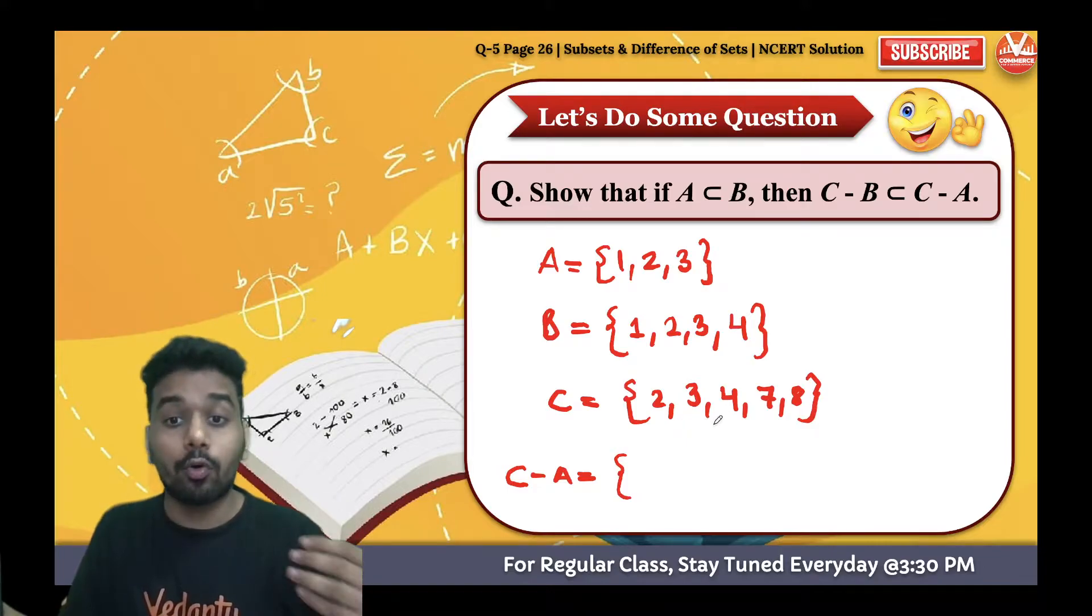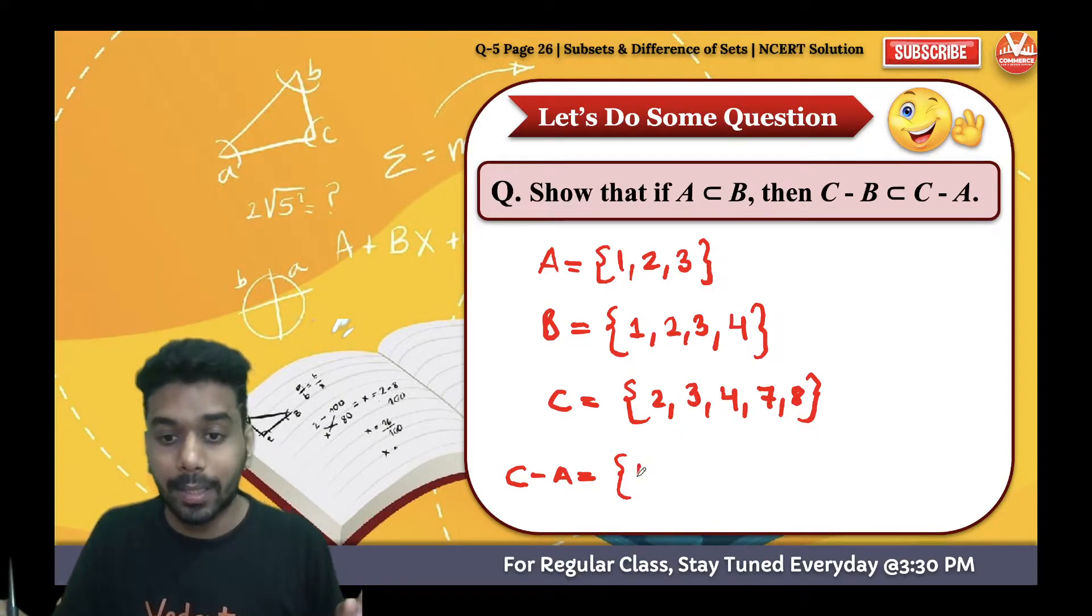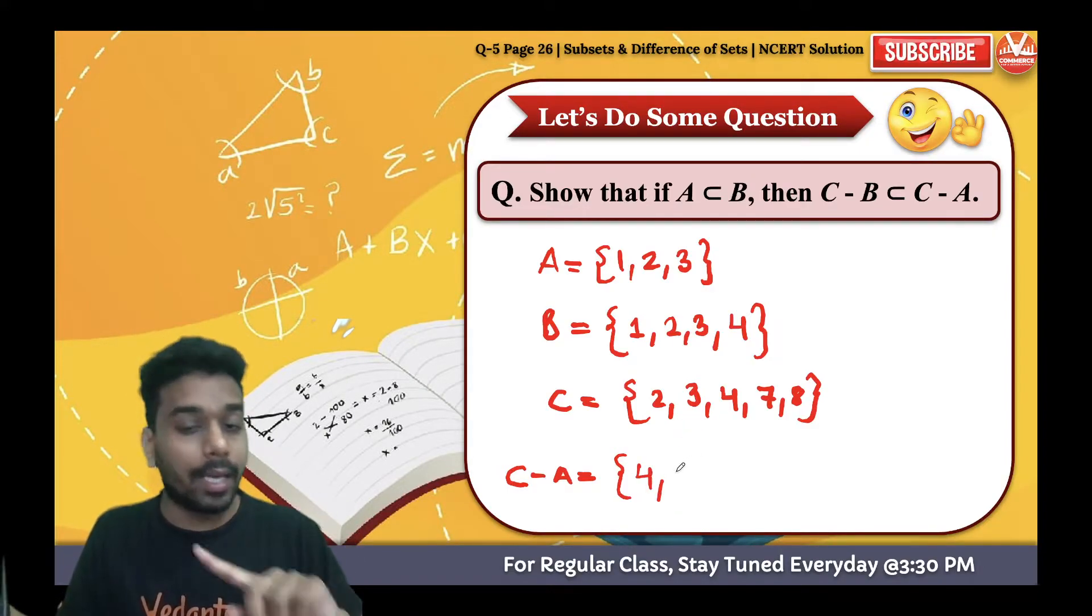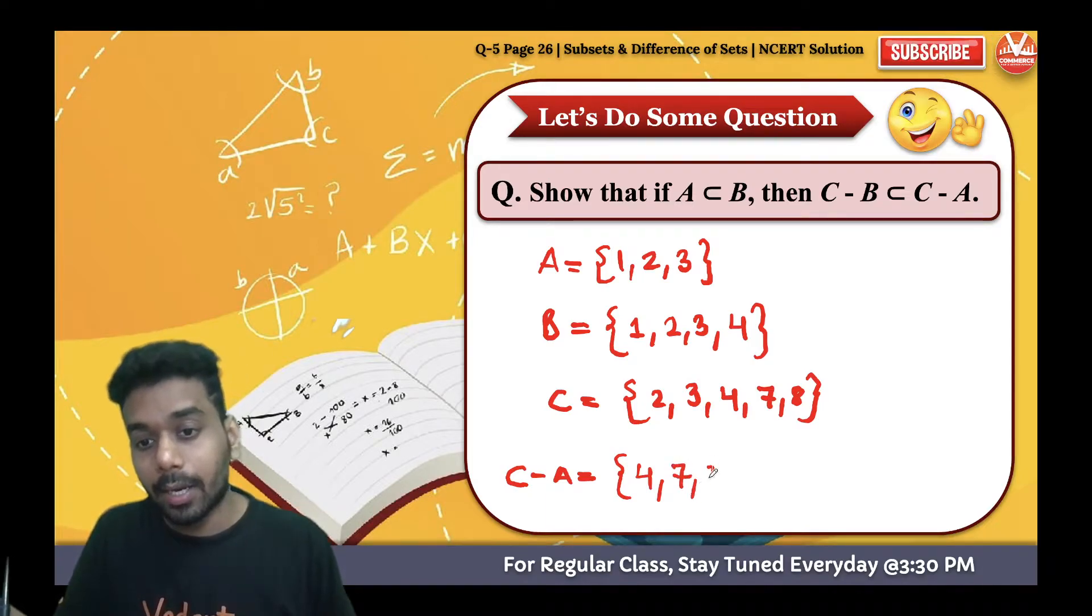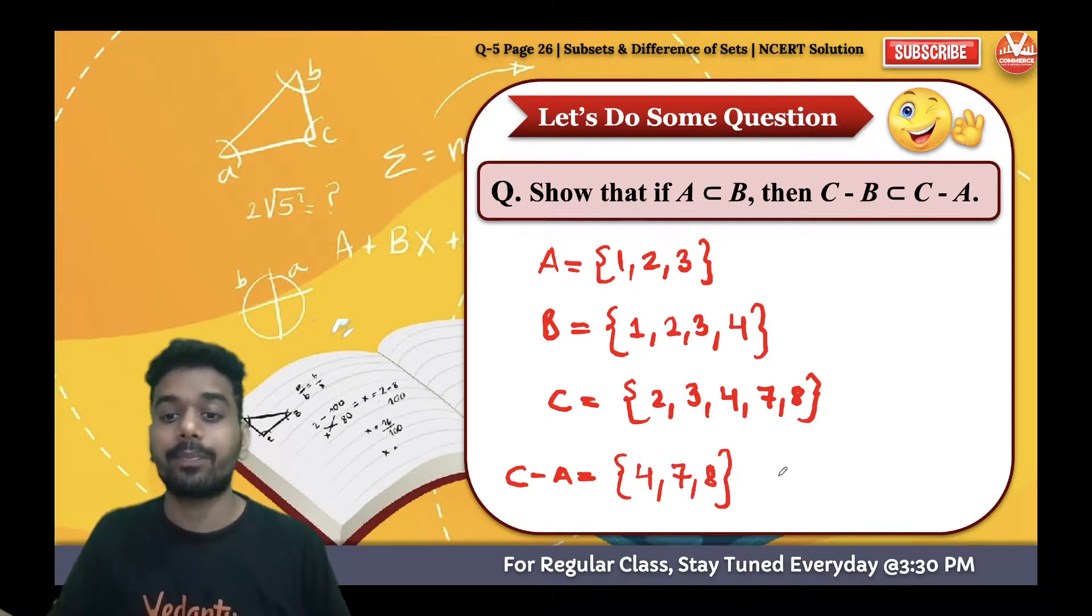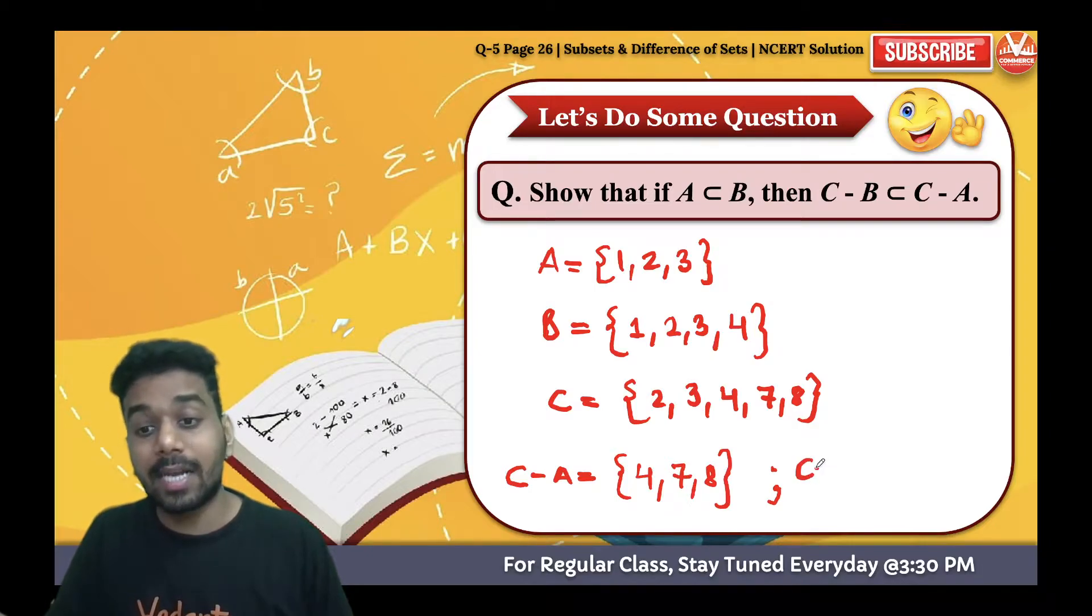4 present in A? No, so keep it. 7 present in A? No. 8 present in A? No. So this is C minus A.